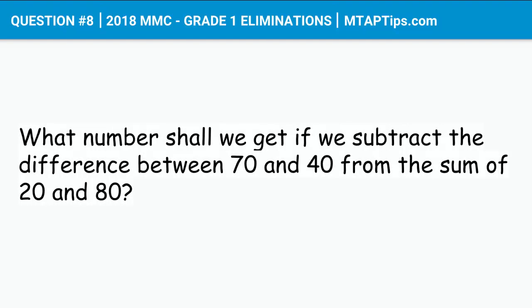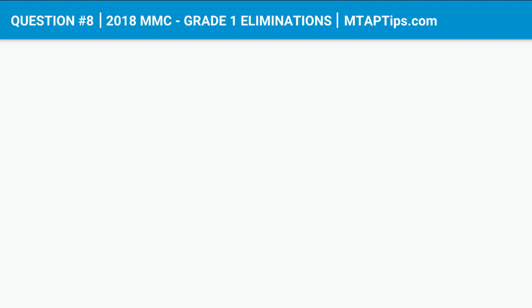Question number eight for 2018 MMC Grade 1 Eliminations: What number shall we get if we subtract the difference between 70 and 40 from the sum of 20 and 80? Take note that the difference between 70 and 40 should be the subtrahend, since it is the number that we need to take away from the sum of 20 and 80.